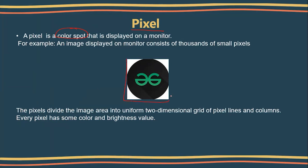Here I have taken one image — this is the GeeksforGeeks symbol. This picture consists of thousands of small pixels arranged horizontally and vertically in the form of a two-dimensional grid, and then the image appears. The pixel divides the image area into a uniform two-dimensional grid, like rows and columns, so that you can see the picture. Every pixel has some color or brightness value.